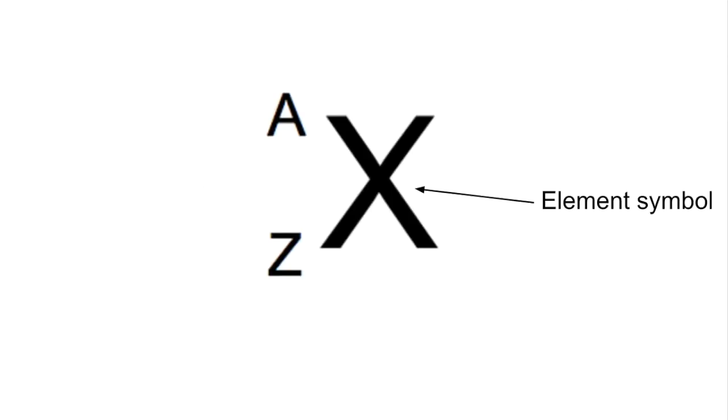In this video, I'm going to take a look at nucleus symbols. We've got the generic nucleus symbol there for element X, and you can see there are two letters: a capital A and a capital Z.